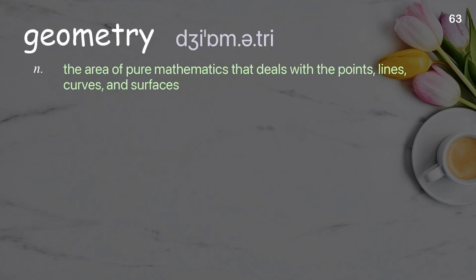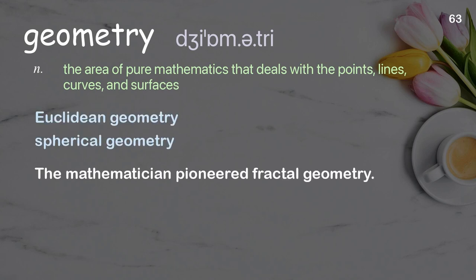Geometry: the area of pure mathematics that deals with the points, lines, curves, and surfaces. Examples: Euclidean geometry. Spherical geometry. The mathematician pioneered fractal geometry.